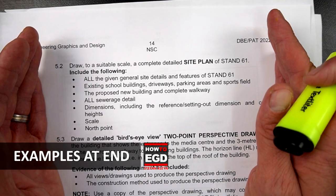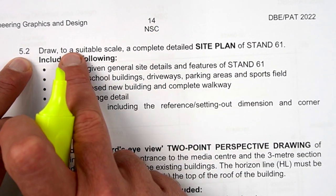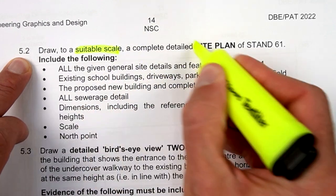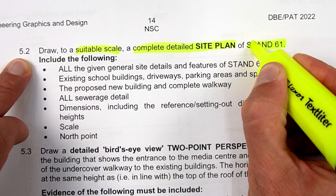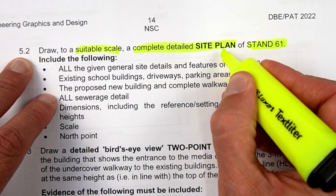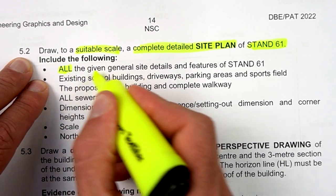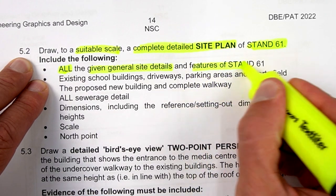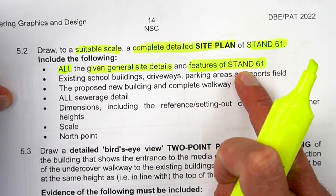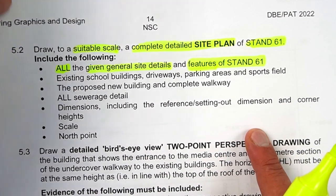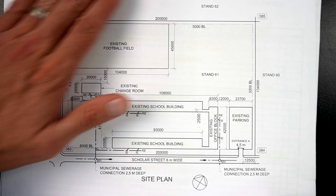I'm going to show you the exact requirements, how to hack this, and show you some practical examples of previous years' work. Let's get started by looking at 5.2 on page 14. You need to draw, to a suitable scale, the complete detailed site plan of Stand 61. In this you must include all the given general site details and features of Stand 61, which are found on page 11 of the document.